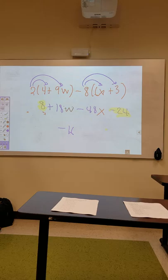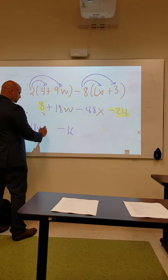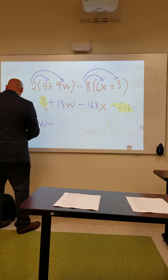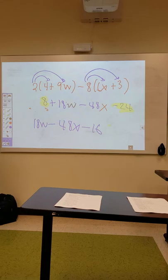What comes first in the alphabet? W, x, y, z. So I put w first. So we have 18w minus 48x minus 16. That's what you should get as your answer.